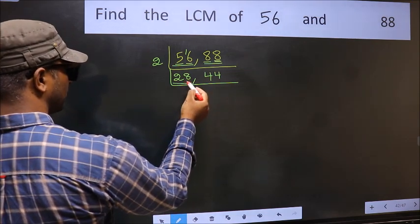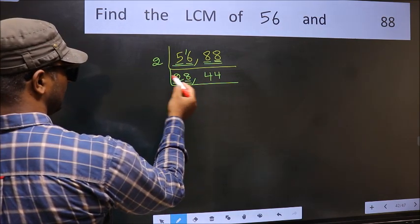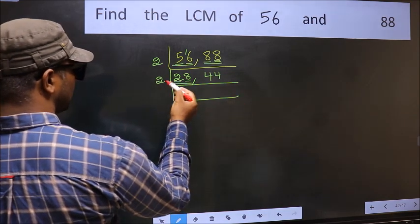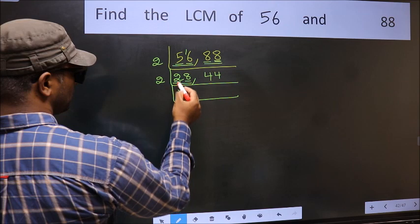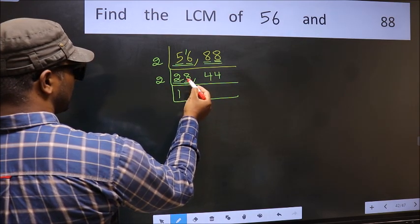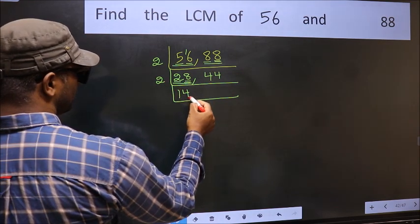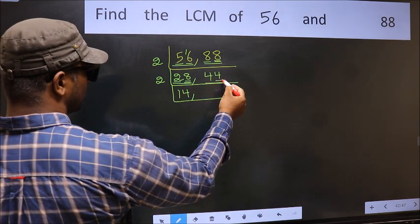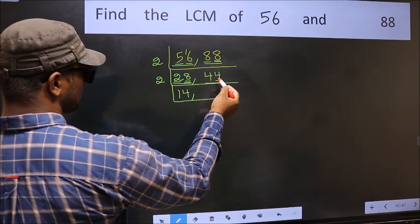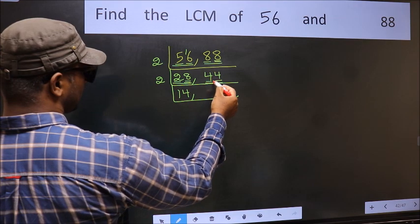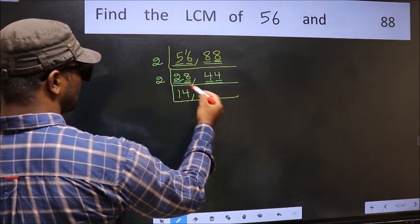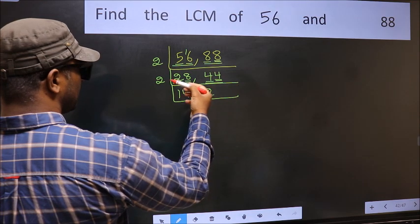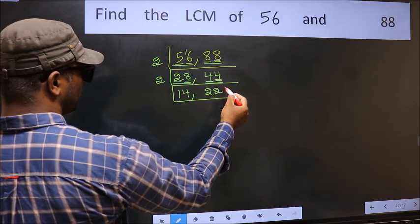Now here we have 28. Last digit is 8 — E1 — so take 2. First number is 2; when do we get 2 in the 2 table? 2 times 1 is 2. The other number is 8; when do we get 8 in the 2 table? 2 times 4 is 8. Now the other number is 44. Last digit is 4 — E1 — so this is divisible by 2. First number is 4; when do we get 4 in the 2 table? 2 times 2 is 4. The other number is 4; 2 times 2 is 4.